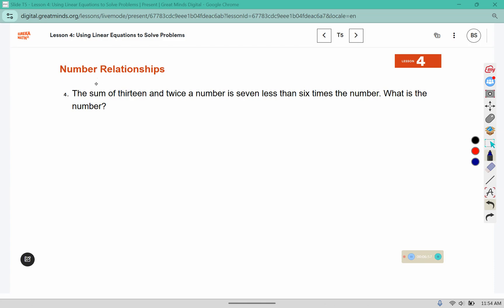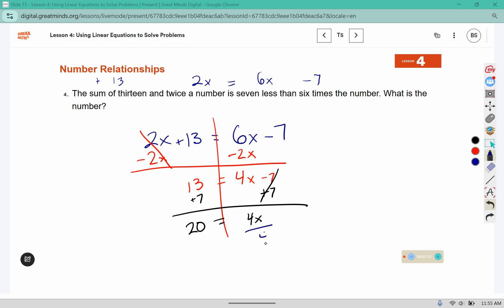The sum of 13 and twice a number is 7 less than, that means minus 7 at the end, 6 times the number. So we have 2x and 13 added together, 6 times the number is 6x, and then 7 less than, that means we take off 7 at the end. So we're moving our variables to the same side, and moving our numbers to the same side. And we will divide to figure out what x is equal to. 20 divided by 4 is 5. So what is the number? The number is 5.